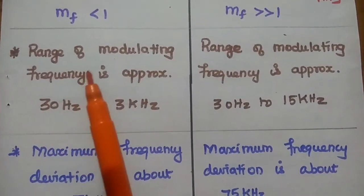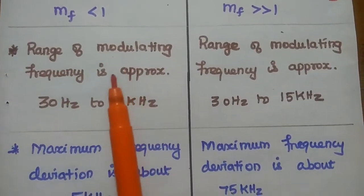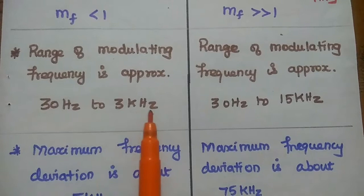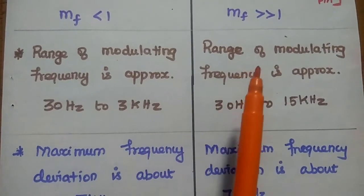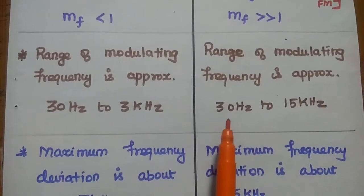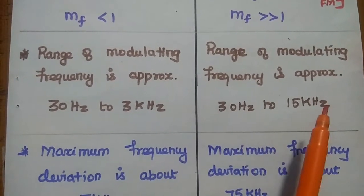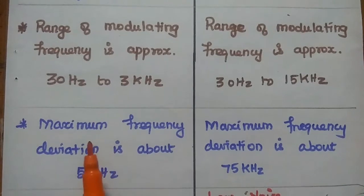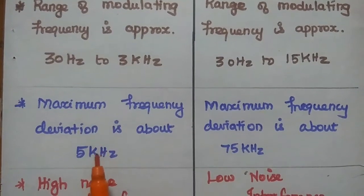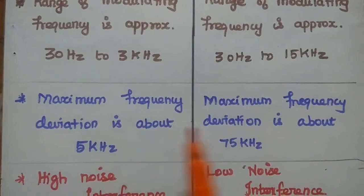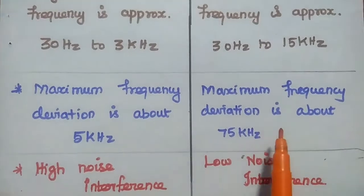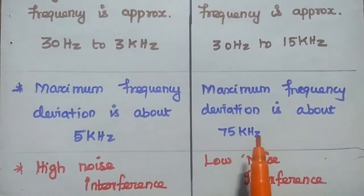In narrowband FM, the range of modulating frequency is approximately 30 Hz to 3 kHz. In wideband FM, the range of modulating frequency is approximately 30 Hz to 15 kHz. The maximum frequency deviation in narrowband FM is about 5 kHz, while in wideband FM it is about 75 kHz.